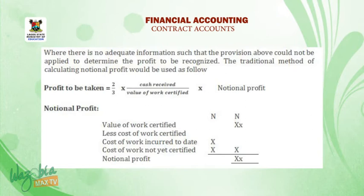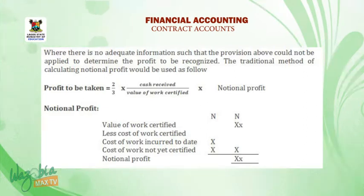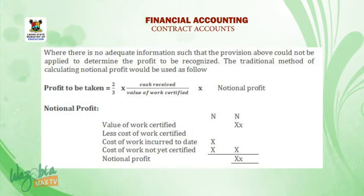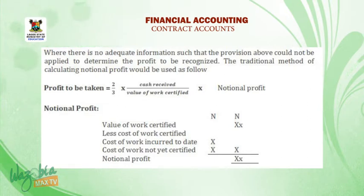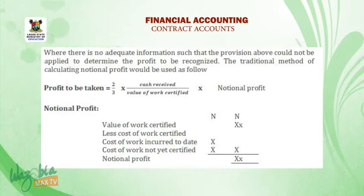Profit to be taken equals 2/3 multiplied by cash received divided by value of work certified, multiplied by notional profit. To calculate notional profit: value of work certified less cost of work certified — that is cost of work incurred to date less cost of work not yet certified — gives us notional profit.